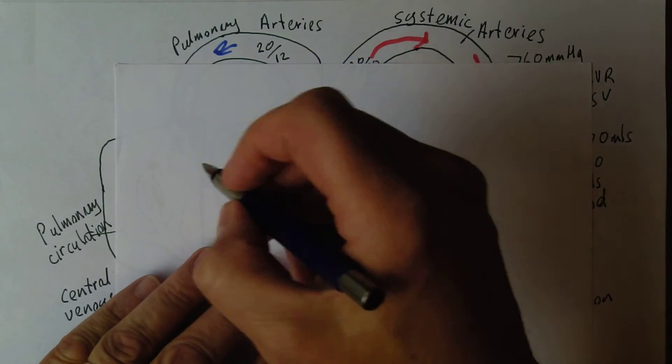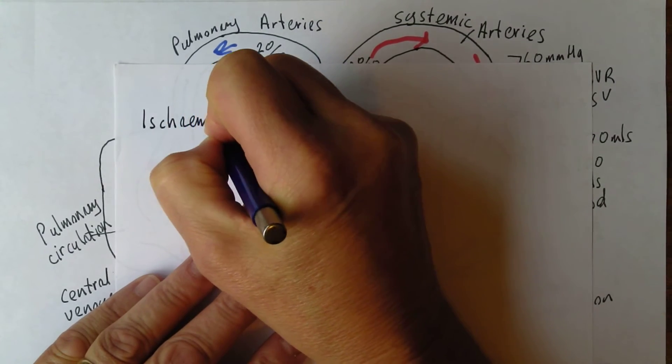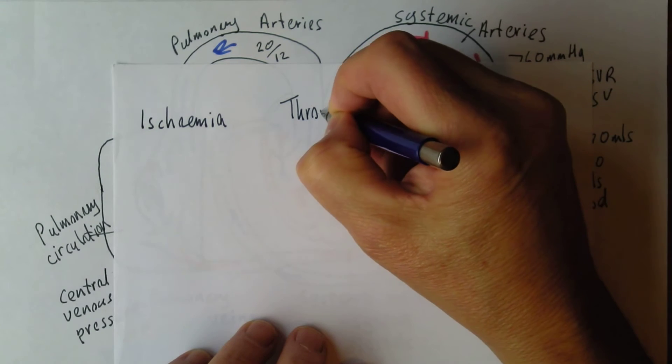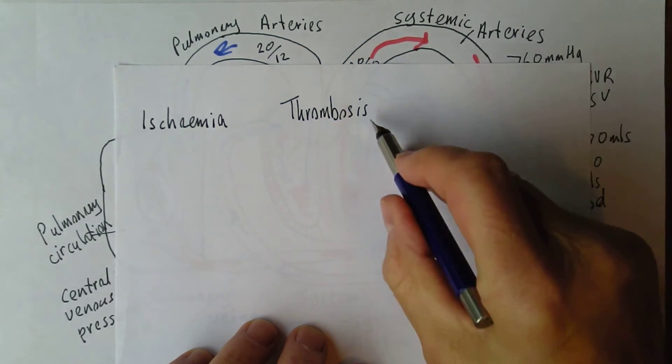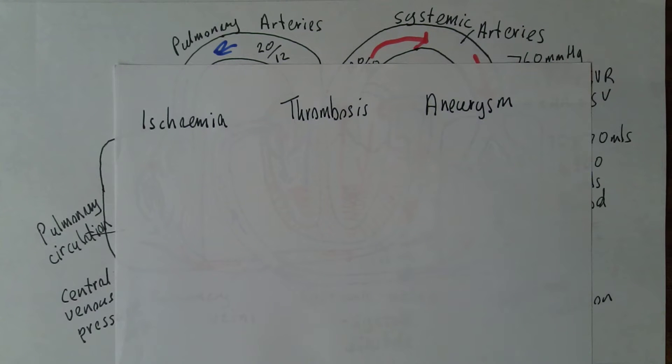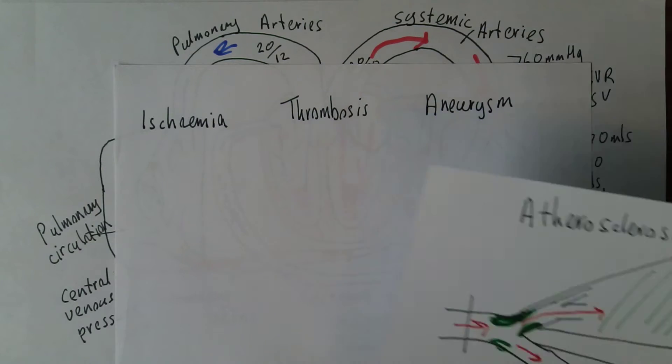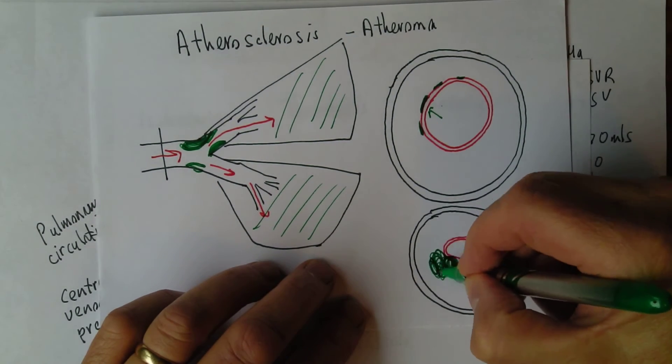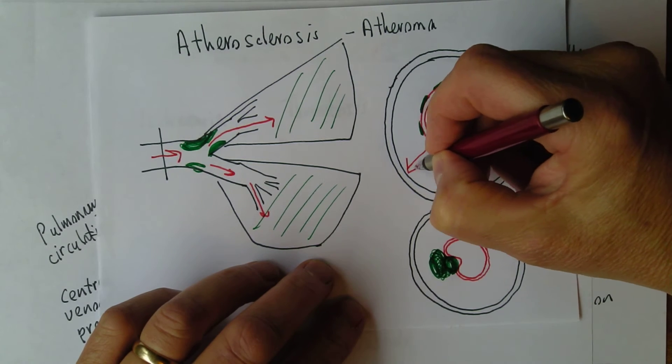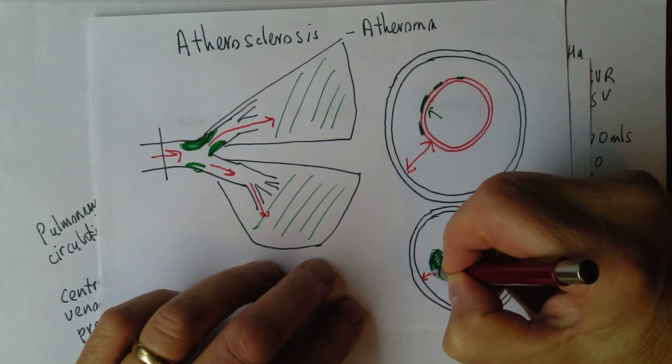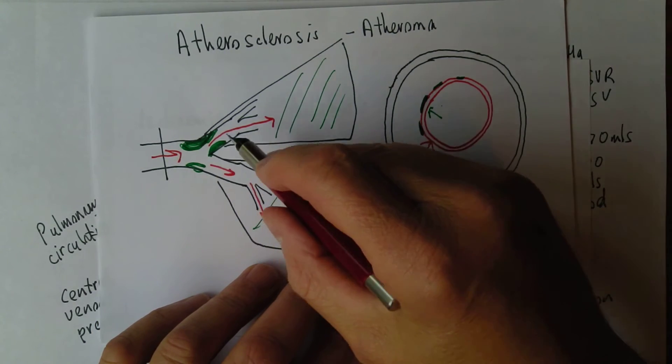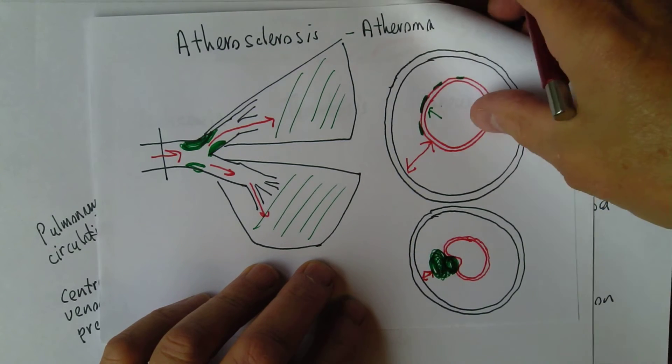One is ischemia, a reduced blood supply to the tissue. Another is thrombosis, a blood clot where there's not supposed to be one. Another is aneurysm, a weakness in the wall of the blood vessel. As the atheromatous plaque develops, there used to be this distance of viable arterial wall. Now there's less distance of viable arterial wall, so it's going to be weaker. The lumen is smaller because it's pressing in. We get a weakened wall with less supply of oxygenated blood getting through.